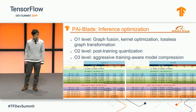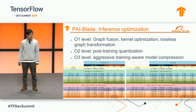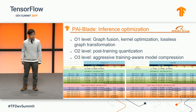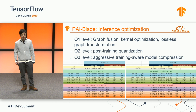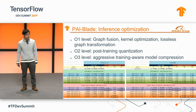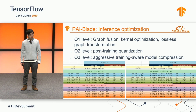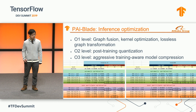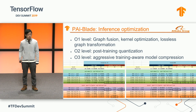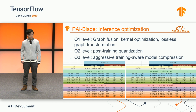On the inference side, we introduced the PAI-Blade tools, which have three levels of optimization. Here are some results — we can see that on public models, we are on par with TensorRT, slightly better.